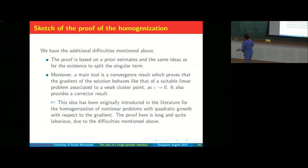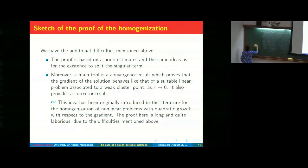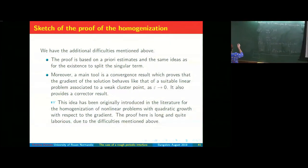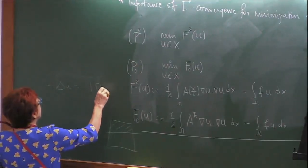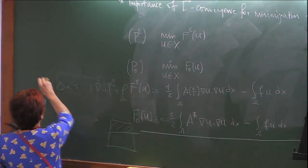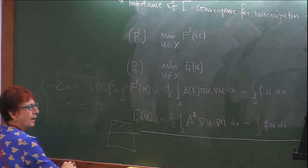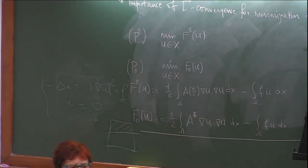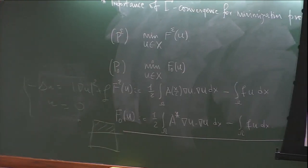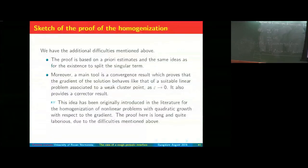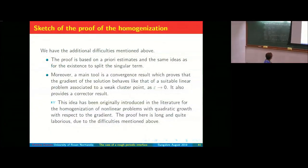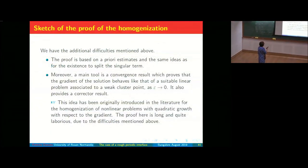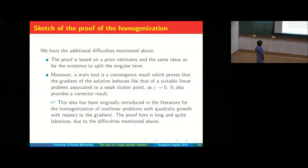This idea was used in very different situations in the literature. It was originally introduced by Boccardo and Murat when they studied quadratic nonlinearities — things like: -ΔU = |∇U|^2 + F with U = 0 on the boundary, in a fixed domain. Then with Antonio Gauriello we worked on the case of perforated domains, and then several extensions were done in various directions. The proof is quite long and laborious with several pages of computations.